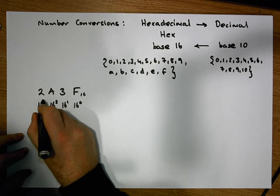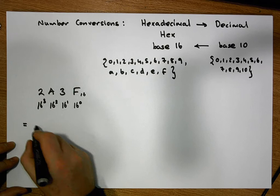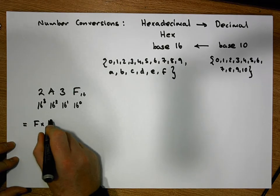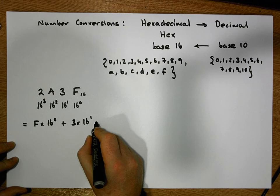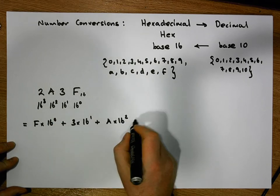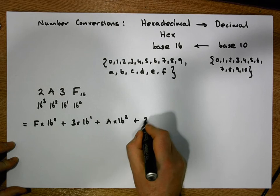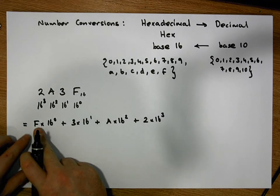So this number has F times 16 to the 0, plus 3 times 16 to the 1, plus A times 16 squared, and has 2 times 16 cubed.